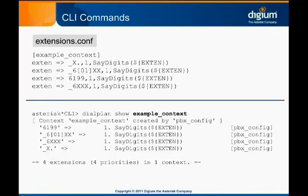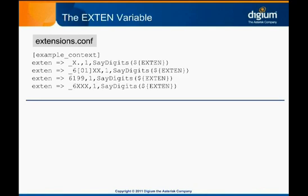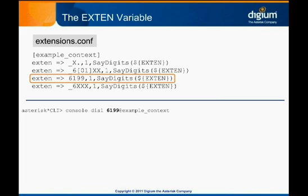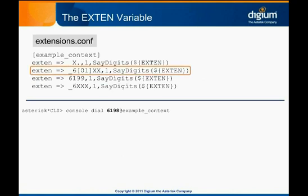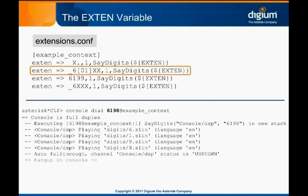Note that 6199 matches all of the extensions in this context. In this dial plan, we use the predefined channel variable called EXTEN. It contains the value of the specific extension in the dial plan that is currently being executed on the channel. If we dial 6199, the third extension down will be executed and we'll hear the digits 6199 played back for us. If we dial 6198, the second extension down will be executed and we'll hear 6198 instead. The EXTEN variable never refers to the pattern because it stores the value of what was actually dialed. EXTEN is very commonly used with pattern matching to keep dial plans small.